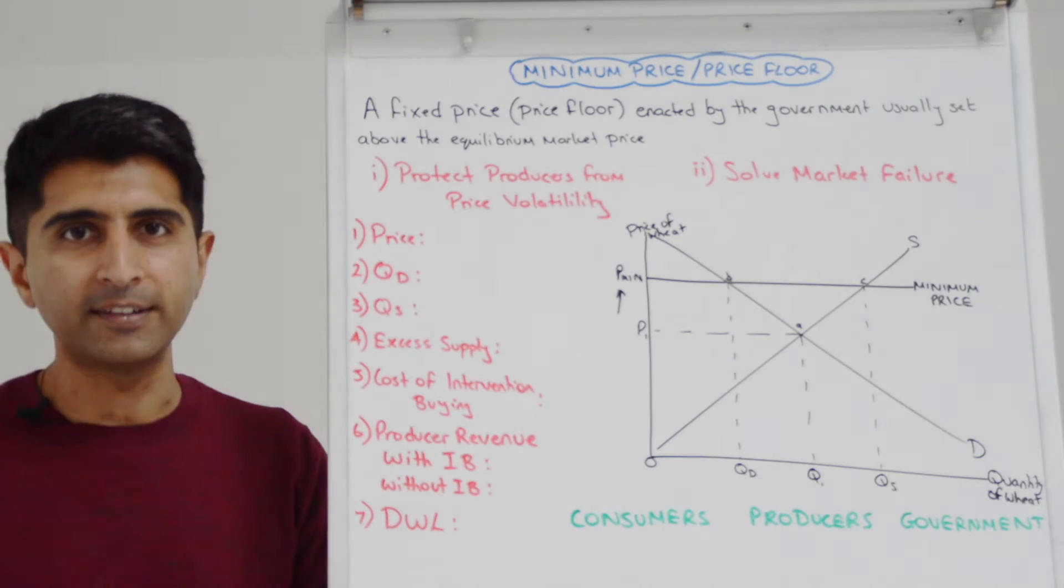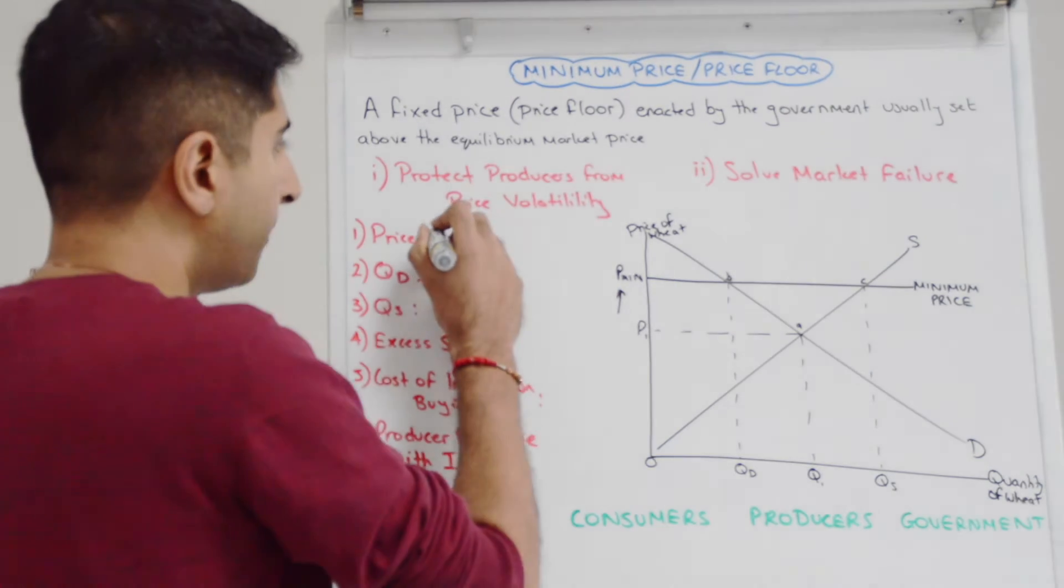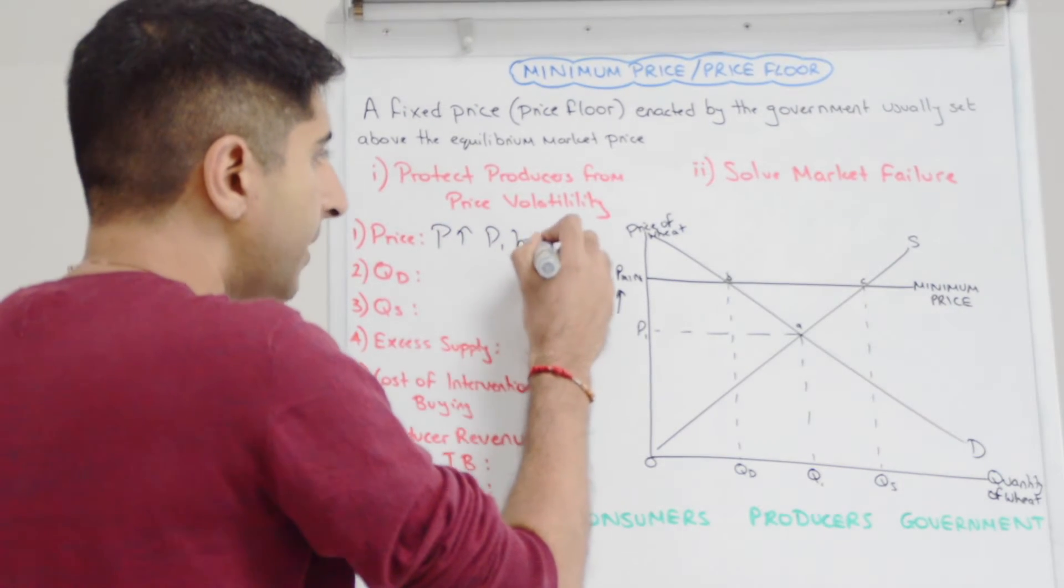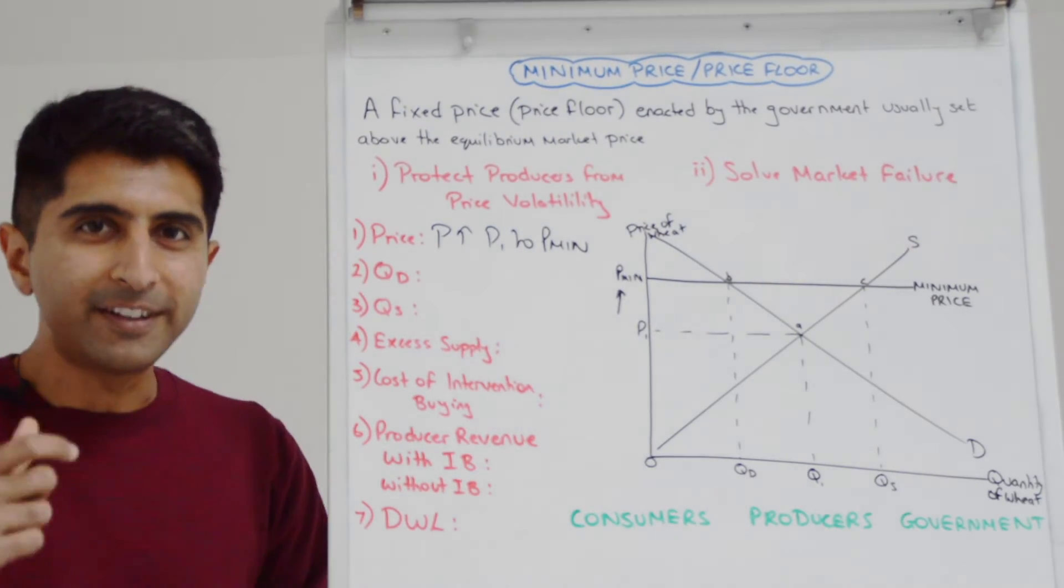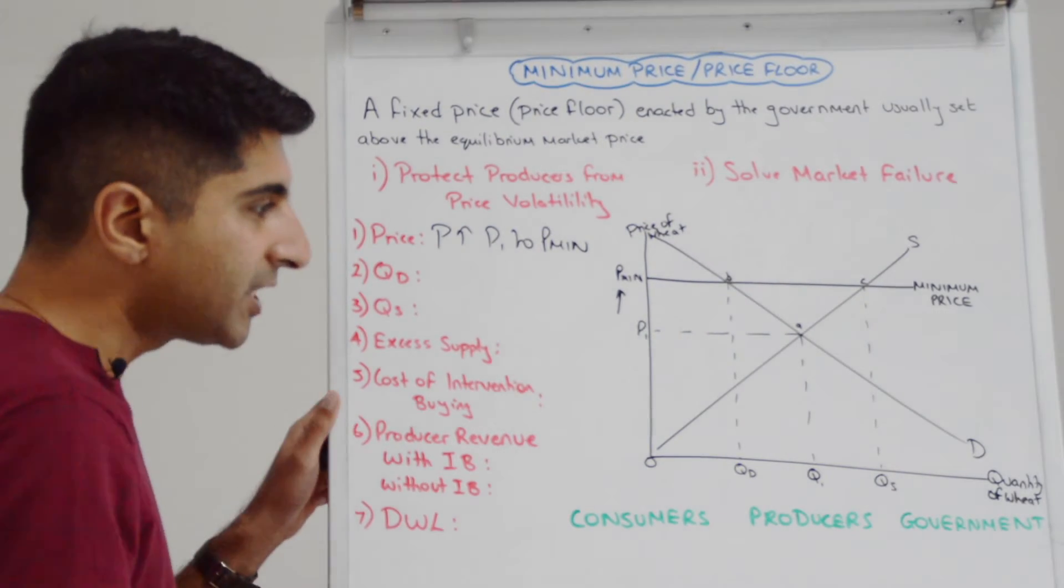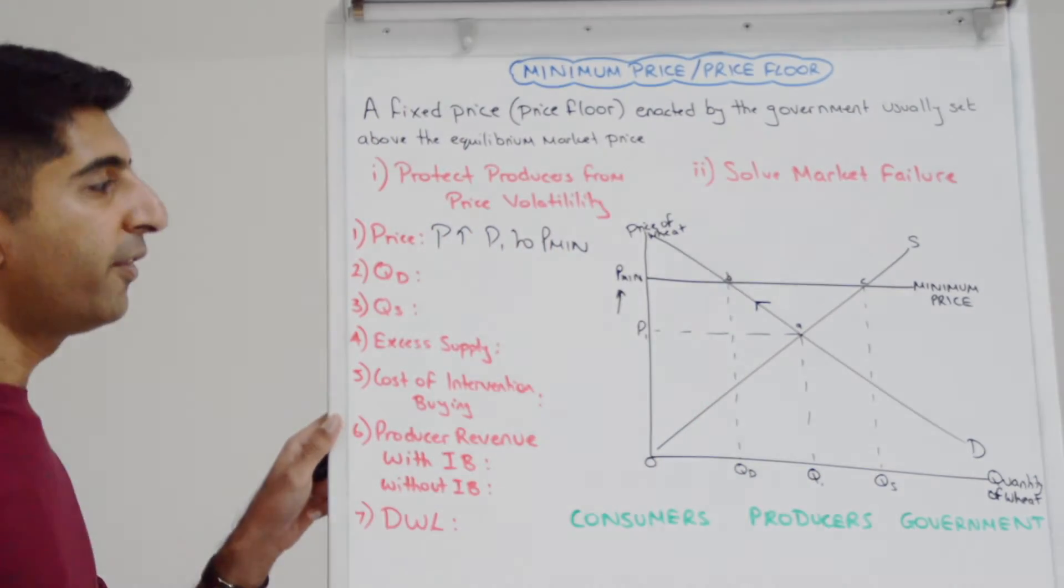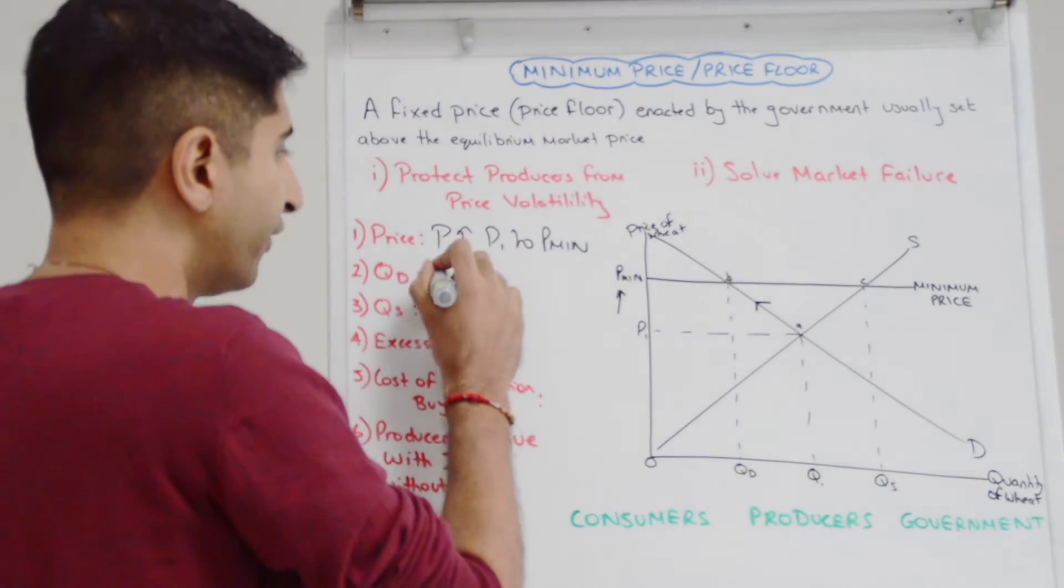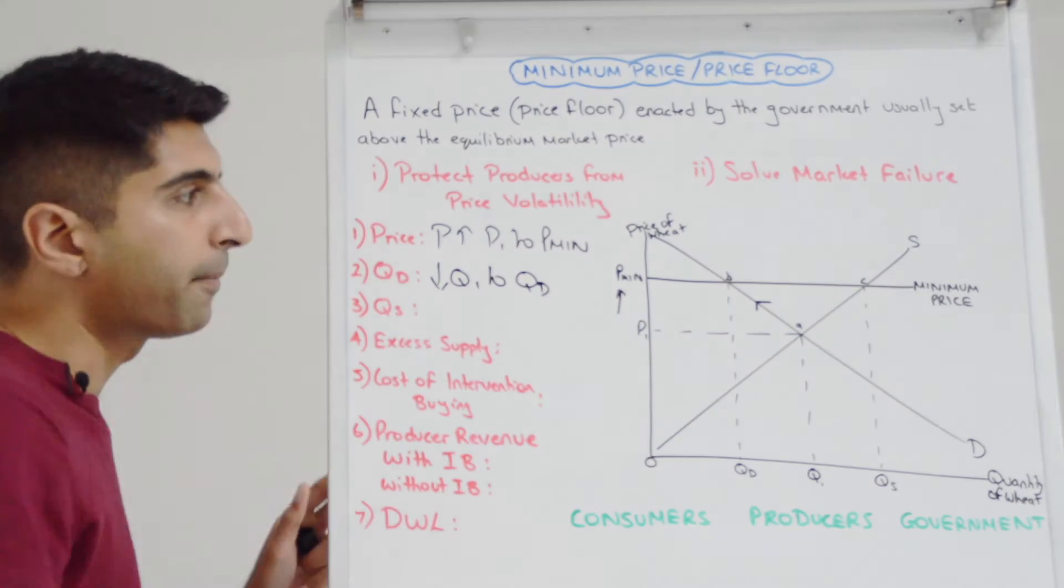Now at that minimum price, let's see what's happened in the market. Well, clearly the price has gone up. That's impact number one from P1 to Pmin. But look what's happened now to demand and supply. Go to demand first. We can see that there has been a contraction of demand, a movement up the demand curve. Demand has fallen therefore from Q1 to QD because of this higher price.